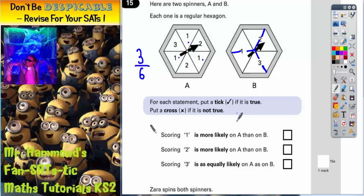So that's three out of six for spinner A. For spinner B, this one here spans across both of these sections. So that's two sections out of a possible six.